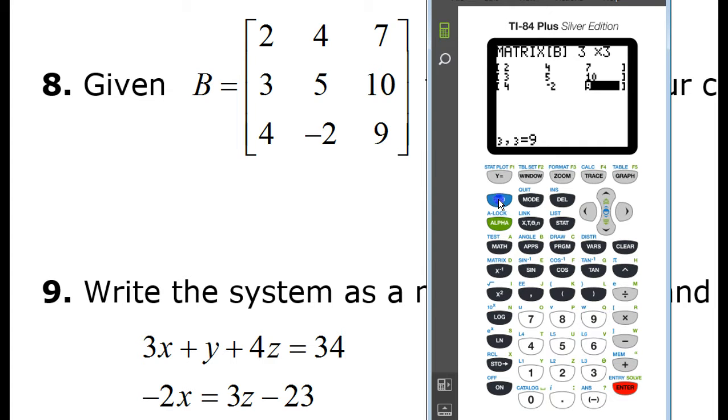All right, let's quit out of here by hitting 2nd mode. In fact, I'll clear the whole screen. So, back to the matrix area, I'll just go down to matrix B, print it on the screen, put a little negative 1 superscript on it, make it the inverse, and hit enter.